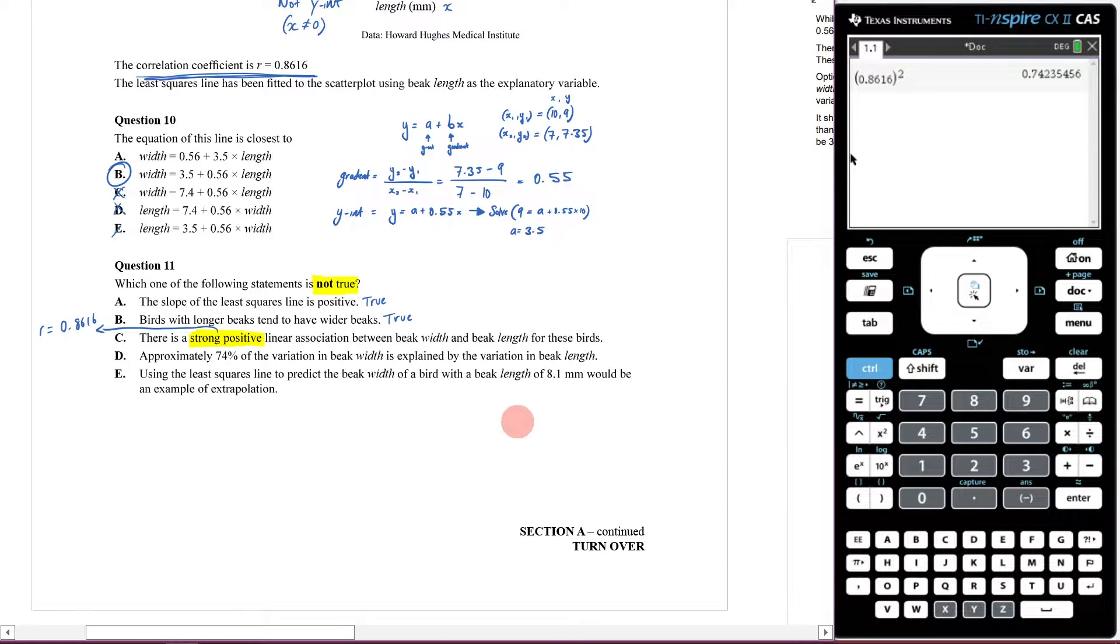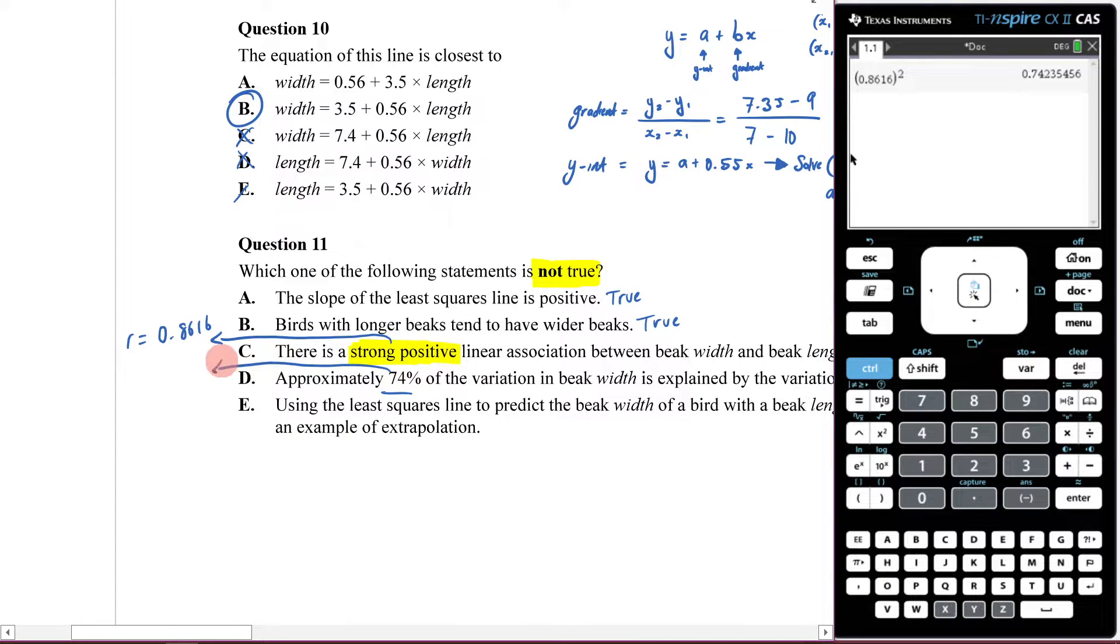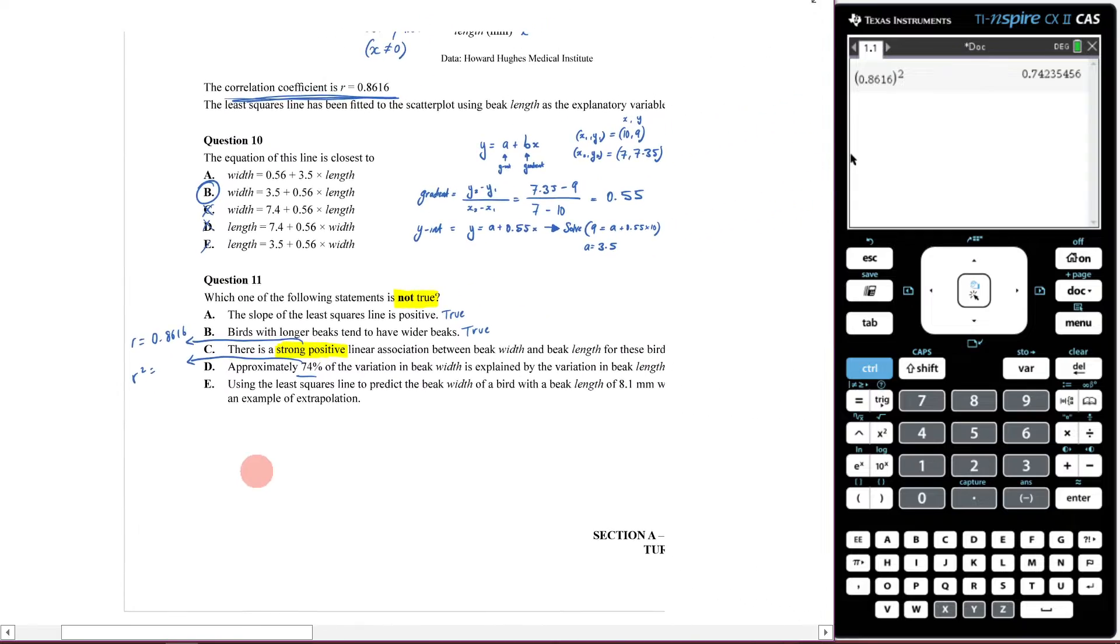It says approximately 74% of the variation in beak width is explained by the variation in beak length. That sentence - 'the variation is explained by' - should remind you of r-squared. Let's look at the notes.